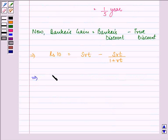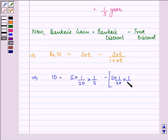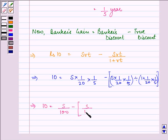Which further implies, 10 is equal to S into R, that is 1 by 20, into T, that is 1 by 5, minus SRT again, that is S into 1 by 20, into 1 by 5, divided by 1 plus R into T. That implies 10 is equal to S upon 100, minus S upon 100, divided by 1 plus 1 upon 100.